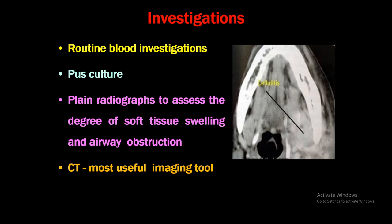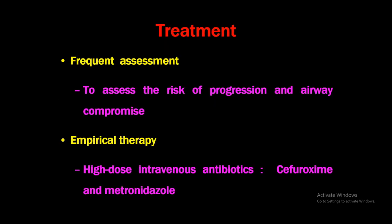Investigations: routine blood investigations are mandatory as there may be septicemia. Pus culture must be done. Plain radiographs assess the degree of soft tissue swelling and airway obstruction. CT scan is more useful than plain radiographs — it shows the site of the lesion, whether the condition is localized or diffuse, and whether infection has spread to other spaces.